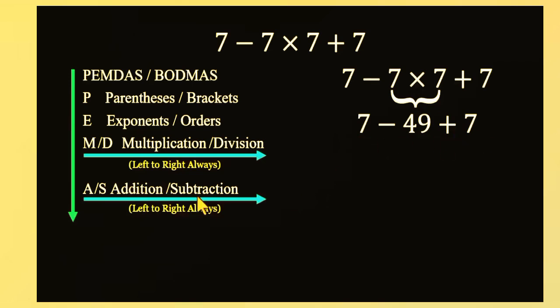Subtraction and addition are equal in rank. So, we go left to right. 7 minus 49 equals negative 42. Then negative 42 plus 7 equals negative 35. And that's the correct answer. Negative 35.